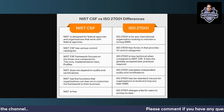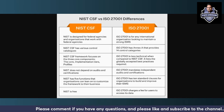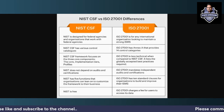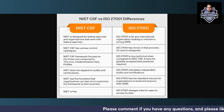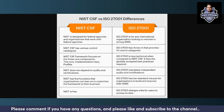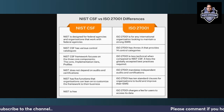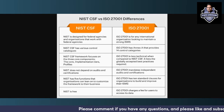NIST has five functions that organizations can lean on to customize the framework to their business. These five functions have been detailed in other videos on this channel. ISO 27001 has 10 standard clauses from the standard itself, so that the organization can refer to these 10 clauses and build and improve their ISMS — their information security management system.